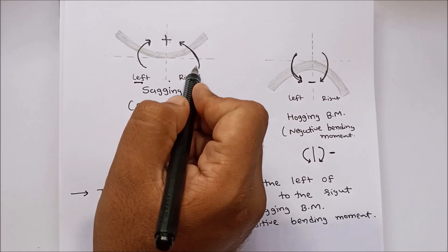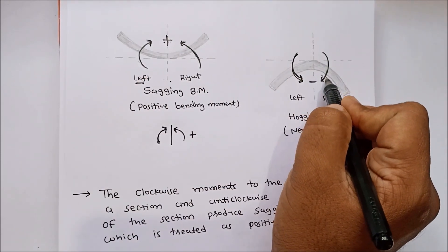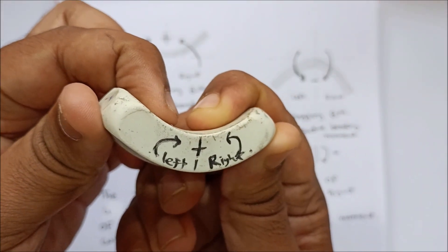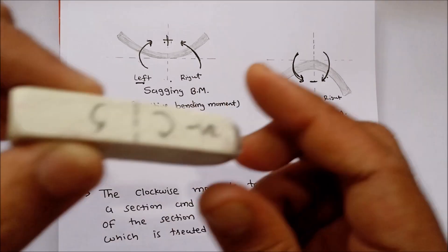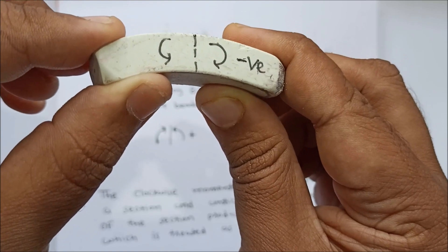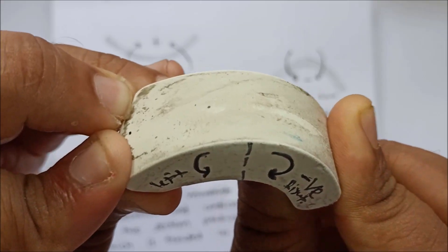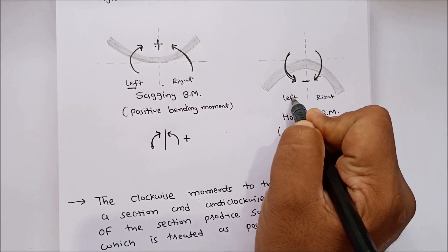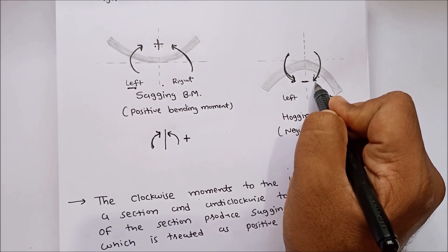Similarly, anticlockwise moment to the right of the section are considered as positive, and clockwise moment to the right of the section are taken as negative. In hogging bending moment, if there is an anticlockwise moment to the left of the section and clockwise moment to the right, it produces hogging bending moment, which is treated as negative.